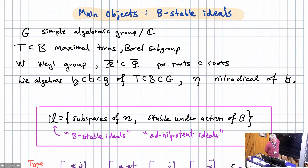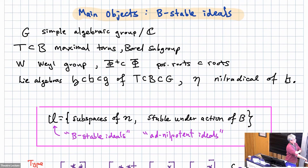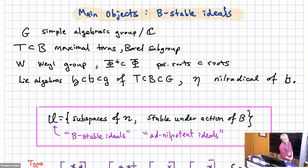This is joint work with Martha Precup. My setup: instead of the reflection group, which will be a Weyl group throughout this talk, I'll be working with the algebraic group over the complex numbers, and I'll fix a maximal torus inside of a Borel. I'll take the Weyl group W; if we need roots, there they are, and the corresponding Lie algebras.